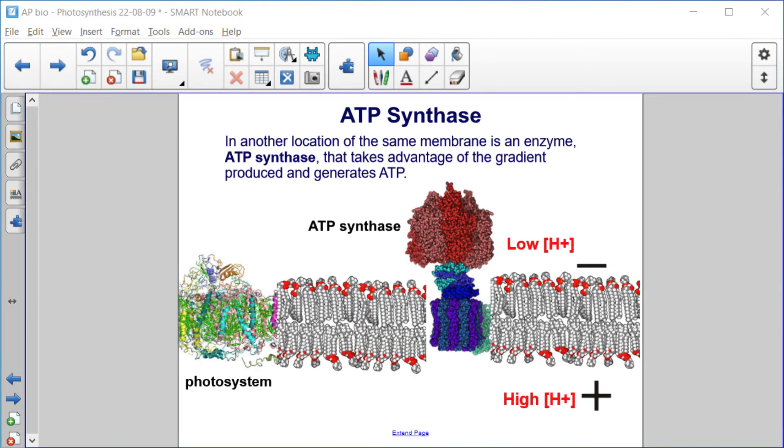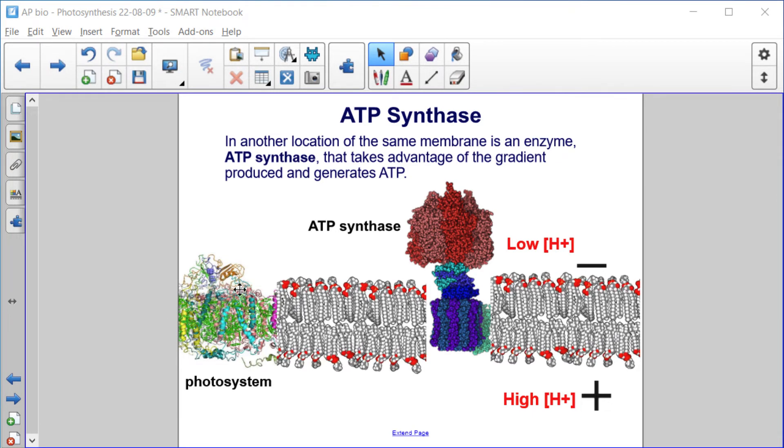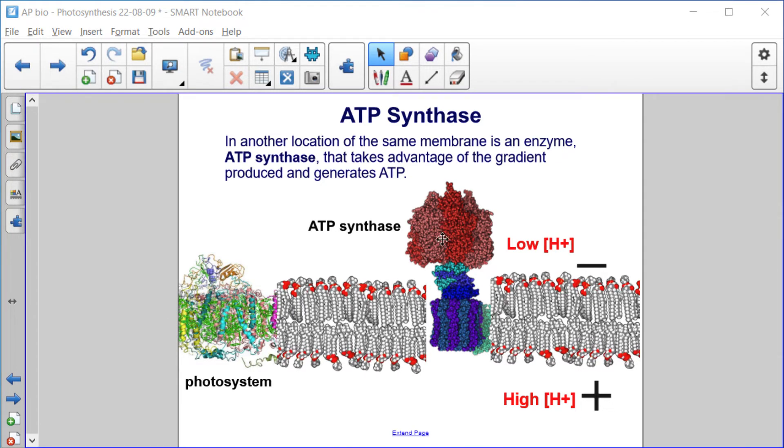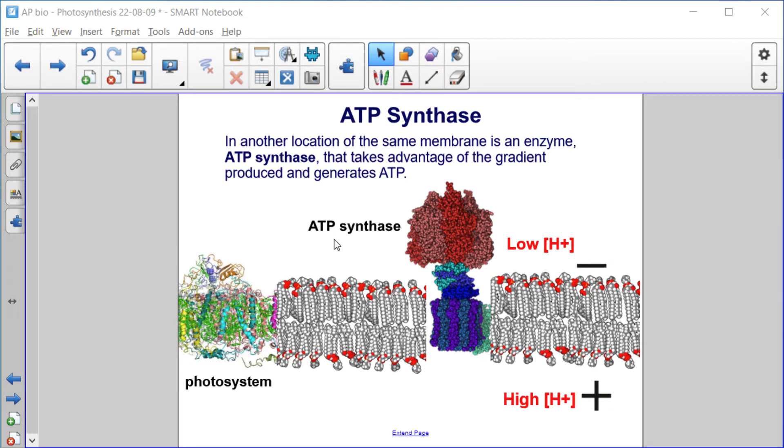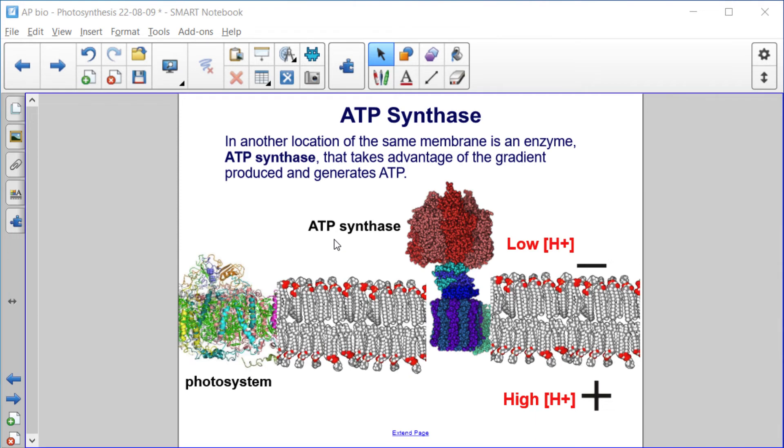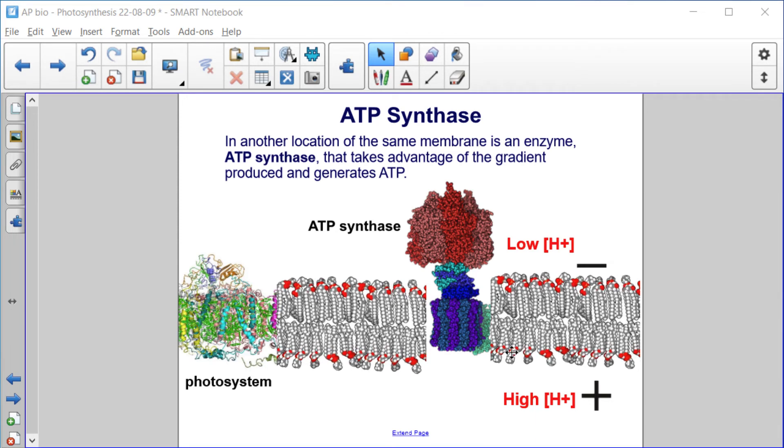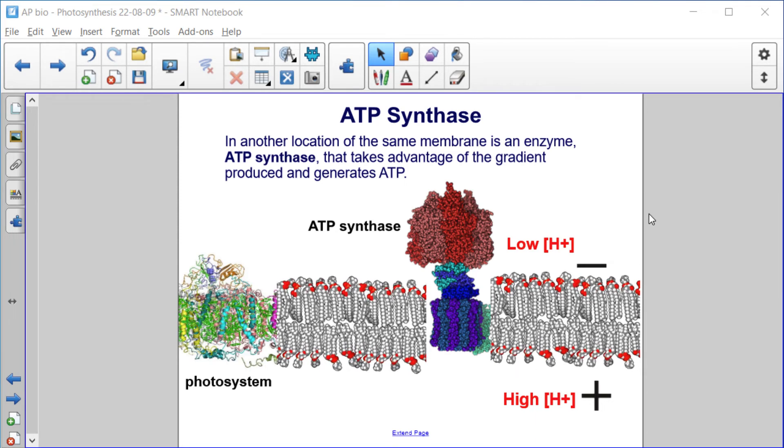In another location of the same membrane, so here's our photosystem, is an enzyme ATP synthase that takes advantage of the gradient produced and generates ATP.